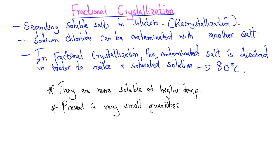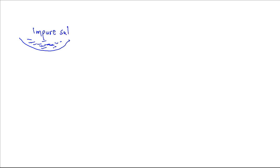We can therefore use fractional crystallization to separate soluble substances. Let's say we have impure salt — we dissolve it in water to make a saturated solution.